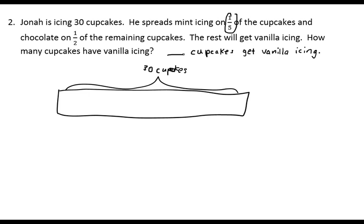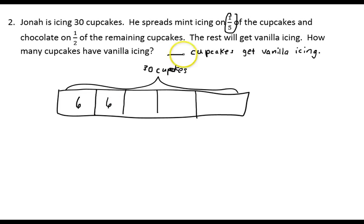There are my 30 cupcakes. I know that one-fifth of the cupcakes get the mint icing, so I'll take the 30 cupcakes and divide that bar into five sections, each section representing a fifth. Since I have 30 cupcakes and five sections, I know that six cupcakes will go into each section. Therefore, one-fifth, or six cupcakes, will have the mint icing.